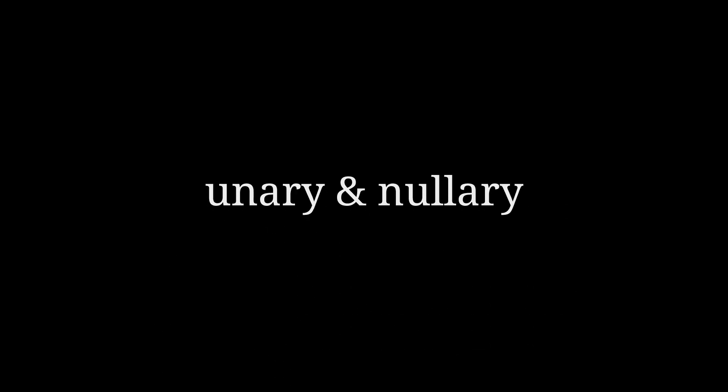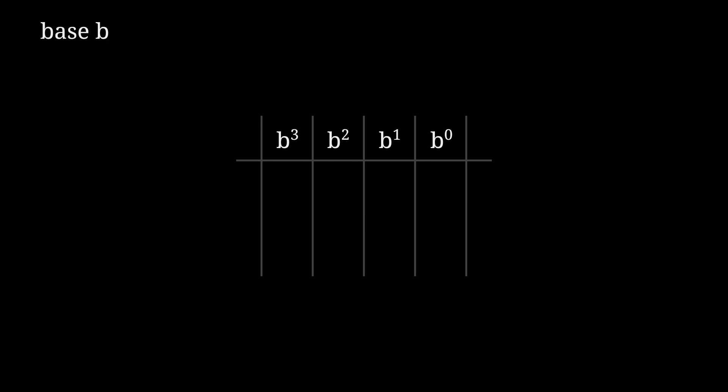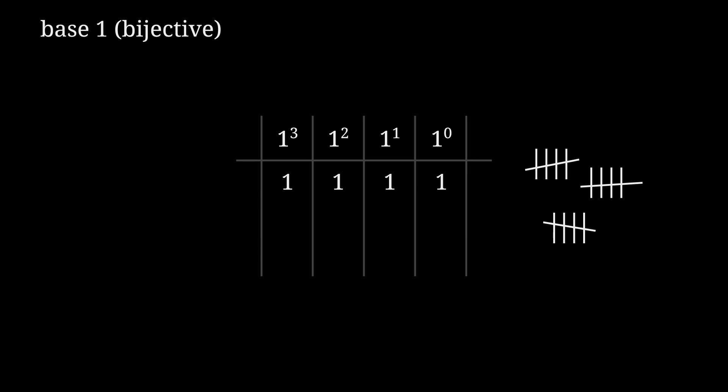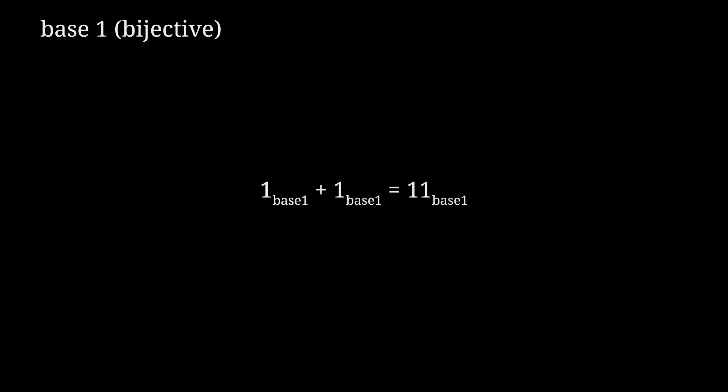The strangest bases come from the strangest numbers, and there are few numbers stranger than 1. In standard positional notation in base b, you get b digits from 0 to b−1. So in unary, you have one digit which is 0 — the only numbers you can write are strings of 0s, each representing 0 multiplied by some power of 1, and every power of 1 is 1. It can still work — remember bijective notation! In bijective unary, the one digit you get is 1. Now the only numbers you can write are strings of 1s, each representing 1 multiplied by some power of 1. This means every integer is represented by that many 1s — like tally marks. Bijective unary has the property that addition is equivalent to concatenation: 1 plus 1 really is 11.